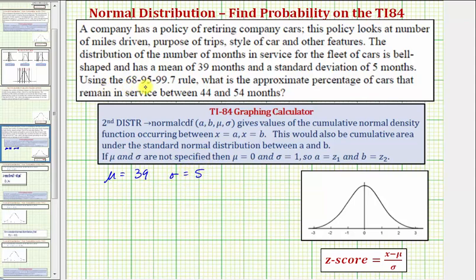We're asked to use the 68-95-99.7 rule, or empirical rule, but in this example we'll be using the TI-84 to determine the approximate percent of cars that remain in service between 44 and 54 months.